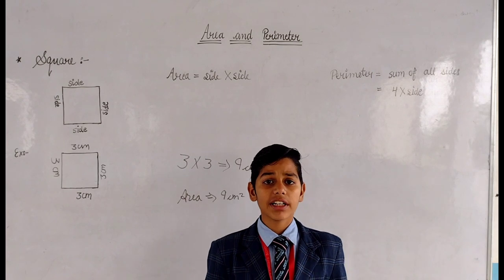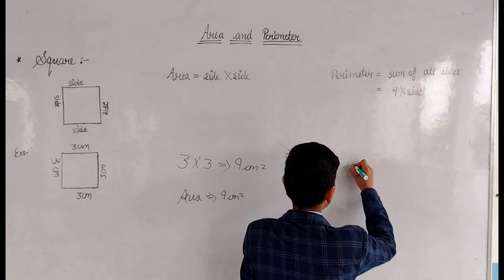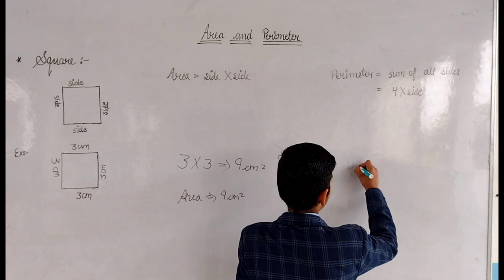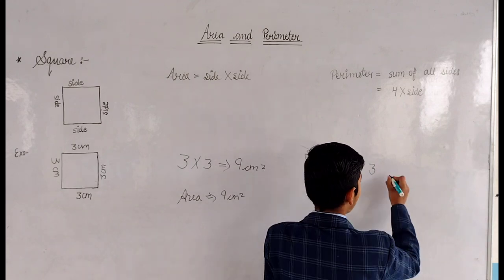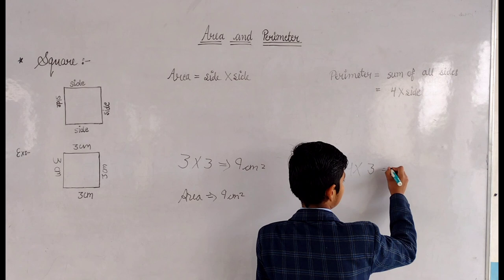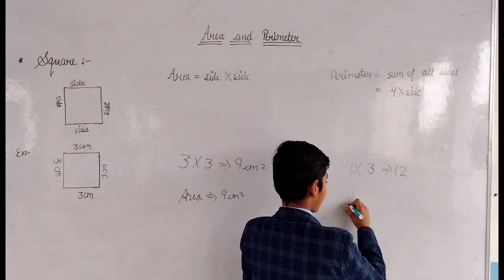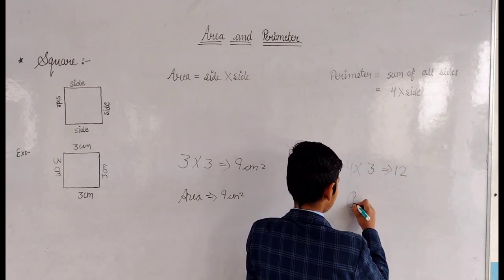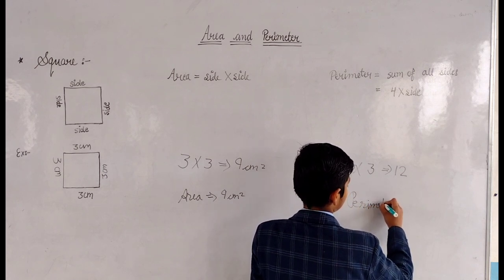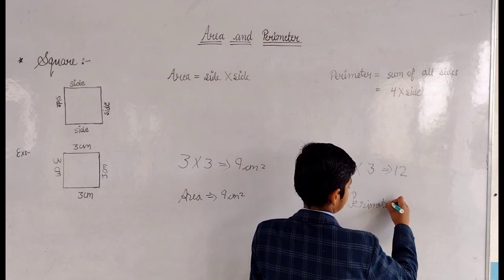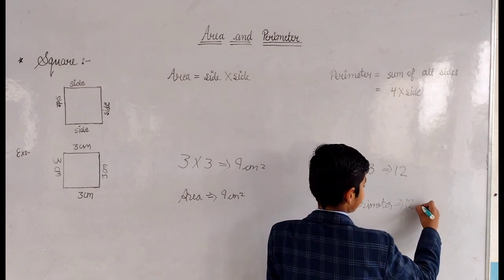Now we will find the perimeter of the square. The formula is 4 × side. Our side is 3 cm, so 4 × 3 = 12. The perimeter is equal to 12 cm.